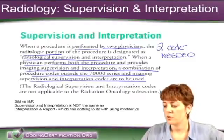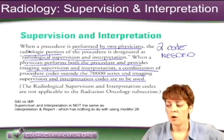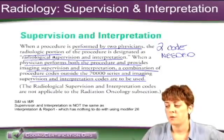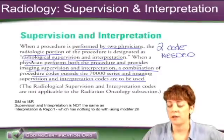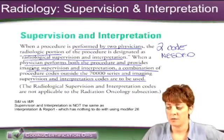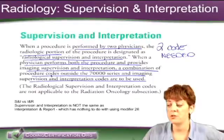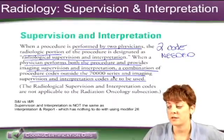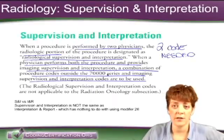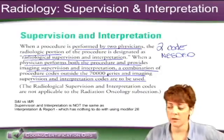Here is the official definition from the CPT guidelines on page 361 in the 2012 professional version: when a procedure is performed by two physicians, the radiologic portion is designated as radiological supervision and interpretation. When a physician performs both the procedure and provides imaging supervision and interpretation, a combination of procedure codes outside the 70,000 series and imaging supervision and interpretation codes are to be used. Outside the 70,000 series means those surgery-type codes.